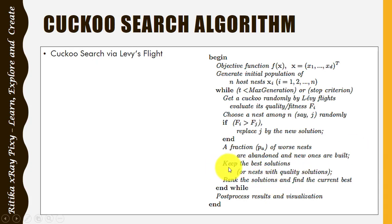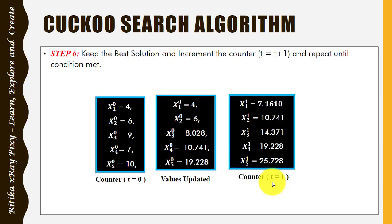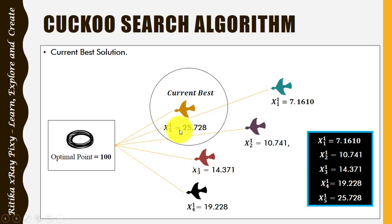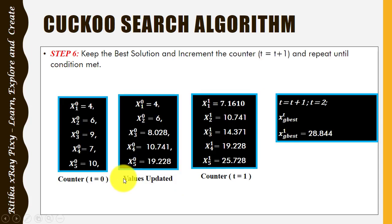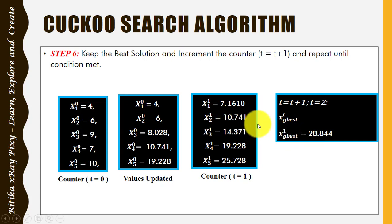Increment the counter to 1. Keep the best solution, rank all solutions, and find the current best. The current best is cuckoo number five — the nearest one to the optimal point — so this is the global best. For iteration 1, the counter was initially 0 (initial stage), now it is 1. The global best position is cuckoo number five.